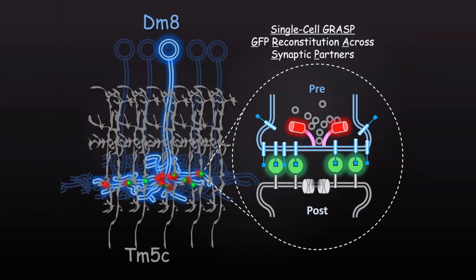Functional GRASP are reconstituted at the membrane contact between Dm8 and Tm5c and when colocalized with the active zone marker BRP, indicate true synapses.